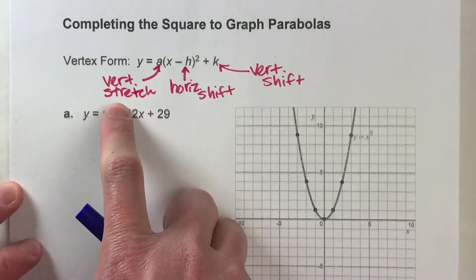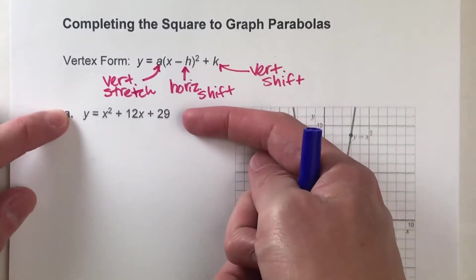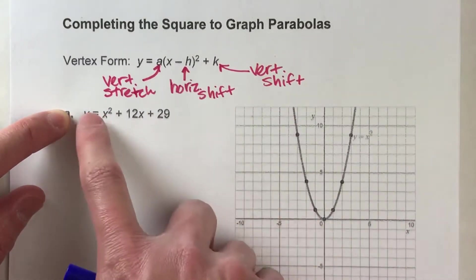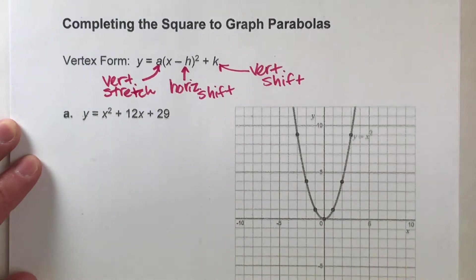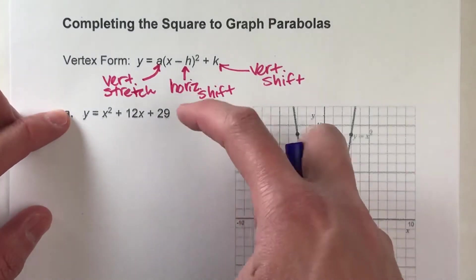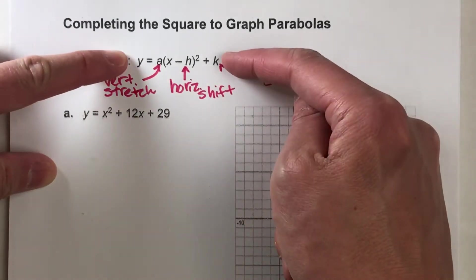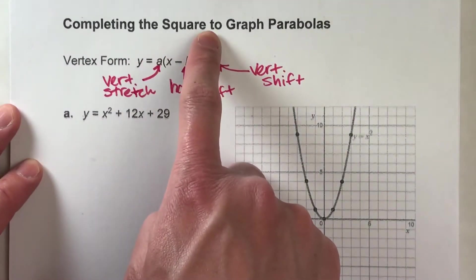Now the thing about today's equations is none of them are going to be in this form. They're all going to be in what we call standard form, which is the equation without parentheses, simplified, just expanded out. So the key to these equations is finding a way to get this equation into this format. And for that, we are going to use a technique called completing the square.